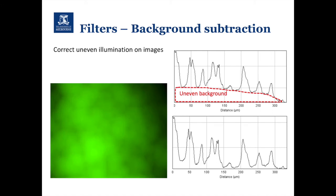It's ideal if your background is even before you start, but if you do have an uneven background you can use a filter within Fiji to remove it and even out the illumination. The benefit is that it's easier to do a threshold — if you draw a line across an uneven background you'll miss some objects, whereas after correction you would identify them all. It's better to set up your microscope properly so you don't need to correct the background, but if you do, there is a tool for that.